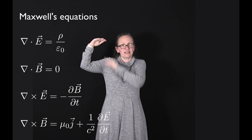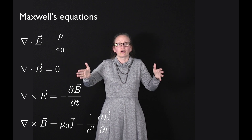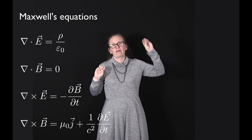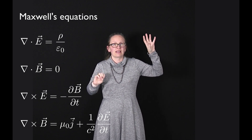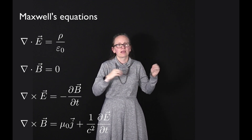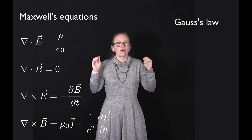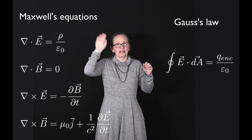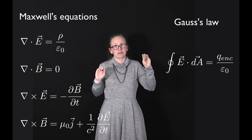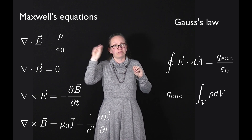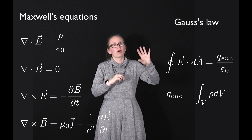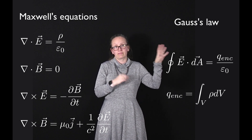Let's look at each of these equations and describe what we know about them already. The first equation, the divergence of E equals rho over epsilon naught, where rho is the charge density — the amount of charge per unit volume — is actually just Gauss's law. We've seen it in integral form as the integral over a closed surface of E dot dA equals q enclosed divided by epsilon naught, where q enclosed equals the integral over the volume of rho dV.